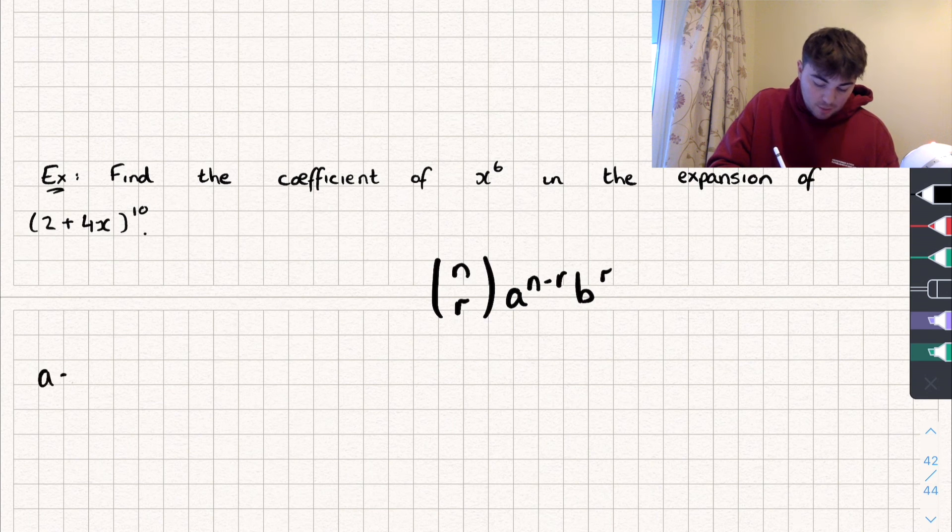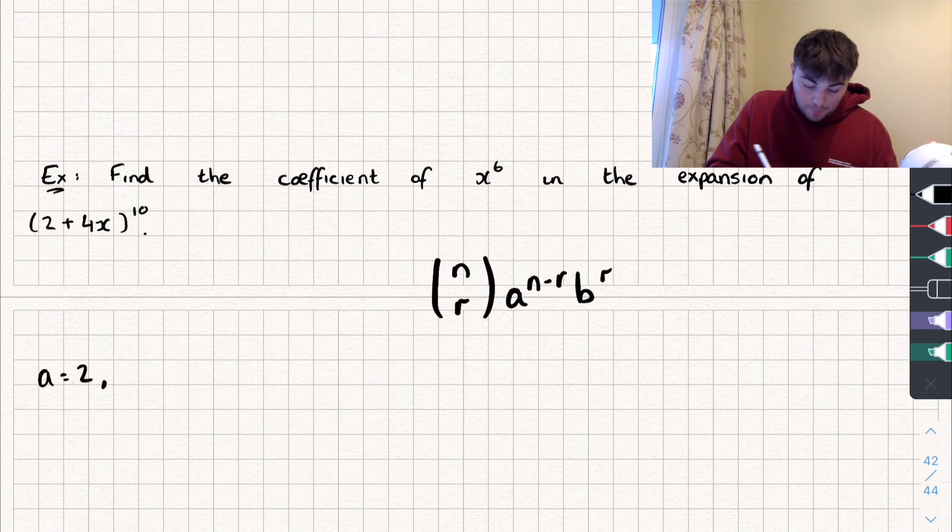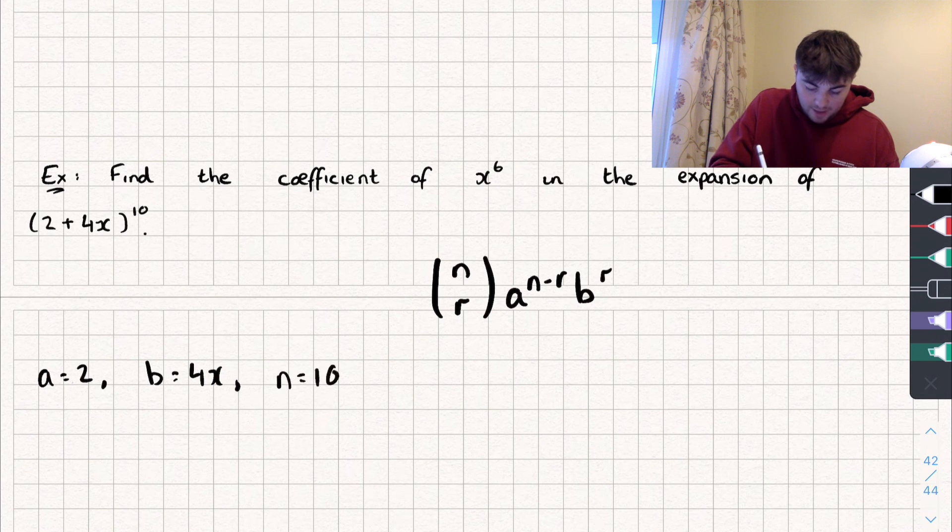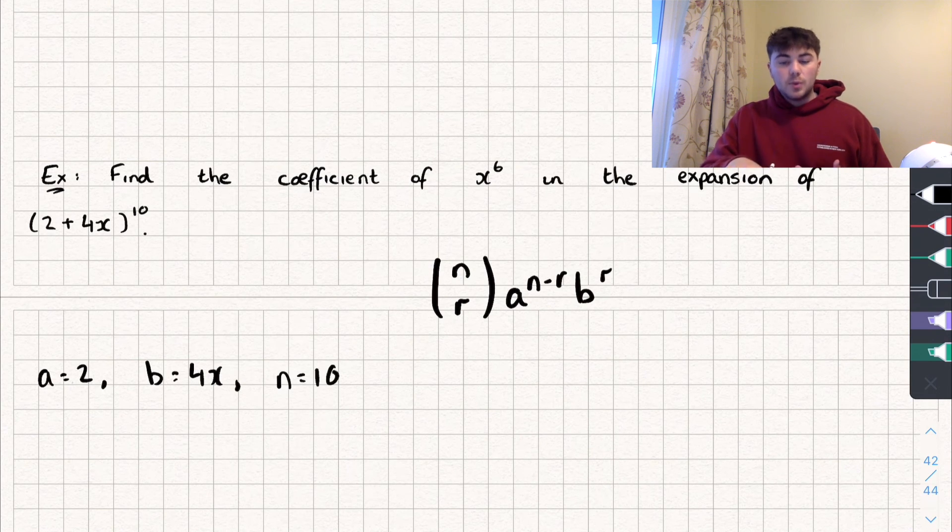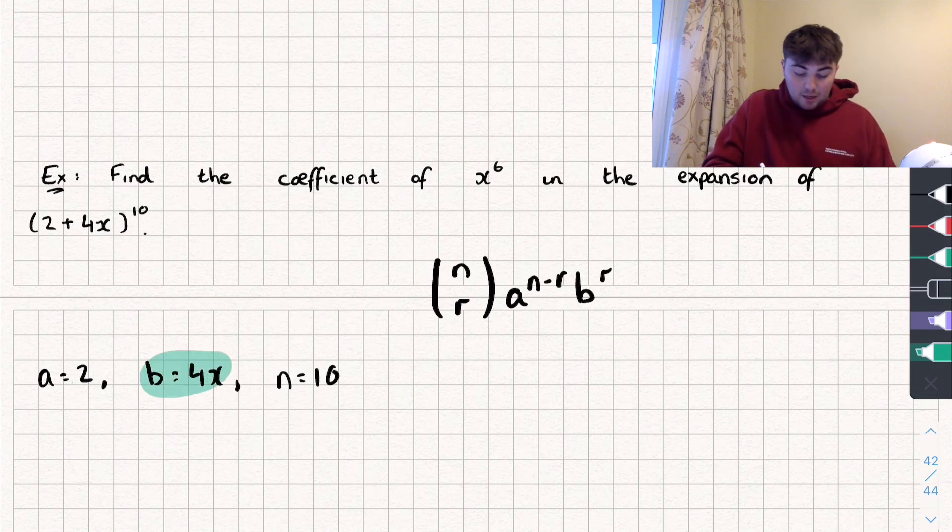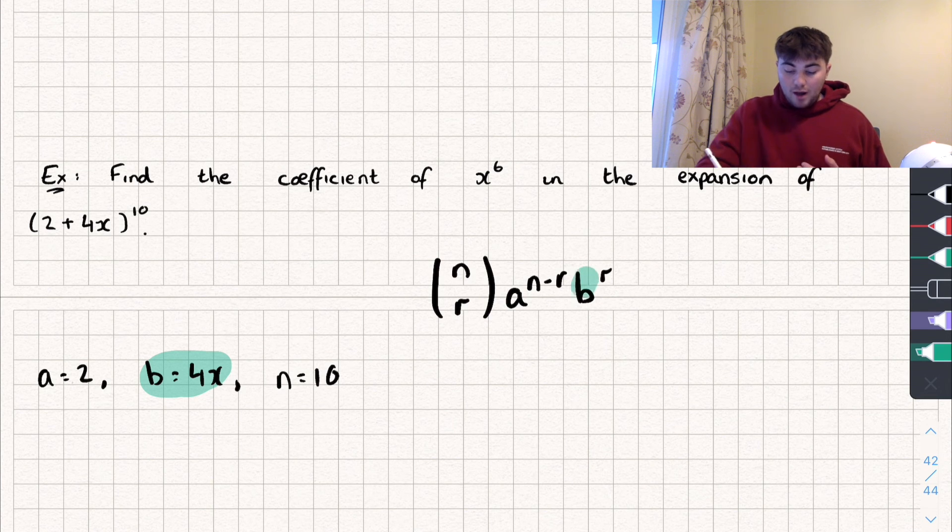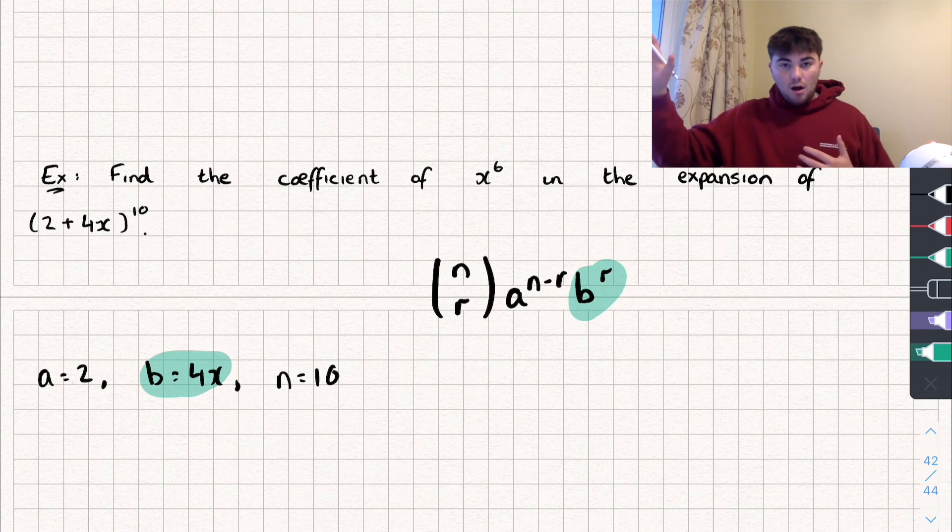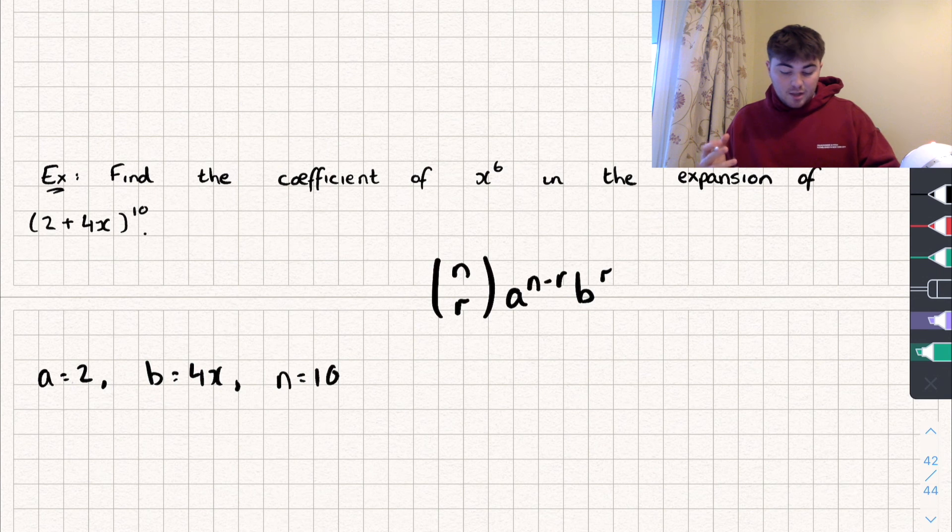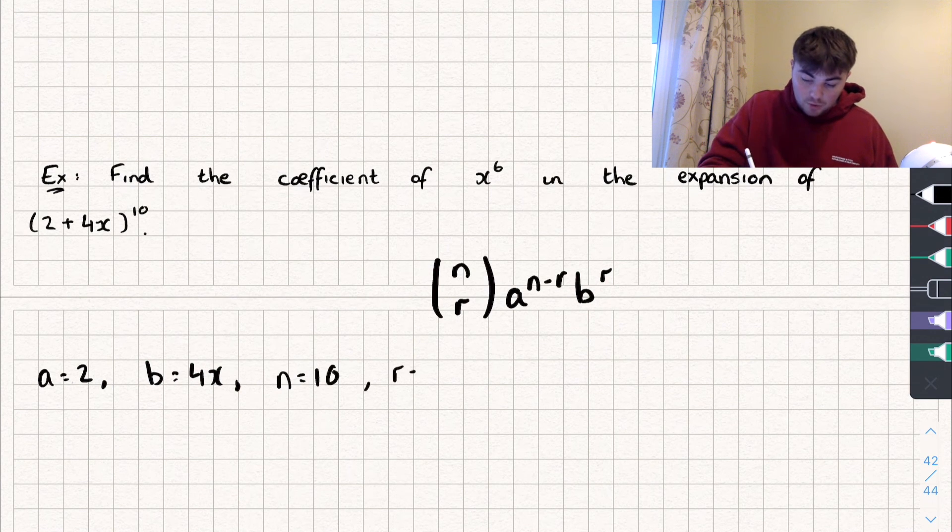So we know a in this case is going to be equal to 2. Our b is going to be equal to 4x. Our n is equal to 10. Now there's an r in this as well, so what is the r equal to? Well, r is just equal to whatever the power of x we want. And the reason for that is, if we take a look here, we have b is equal to 4x. So I want to raise b to the power of r, well I want it to be to the power of 6, so I'm going to set r equal to 6.